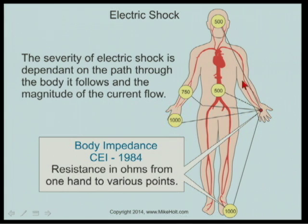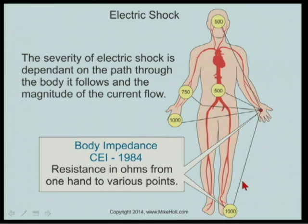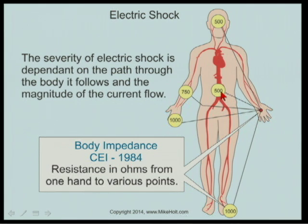This represents resistance: from hand to hand is 1,000 ohms, and from hand to foot is also 1,000 ohms. This represents the body's resistance hand to hand. These values come from the CEI 1984 standard - you can look that up for more information. Hand to stomach is 500 ohms.